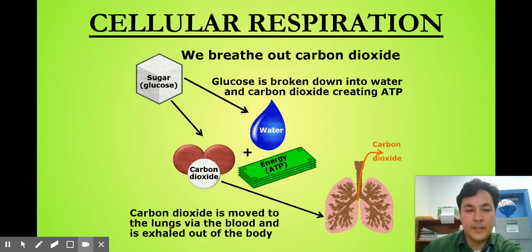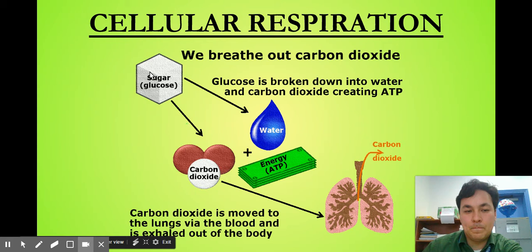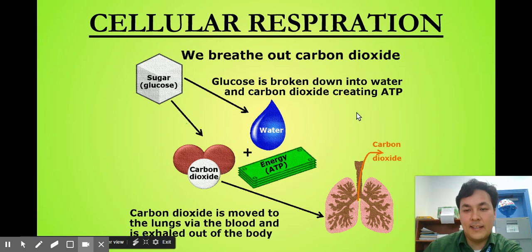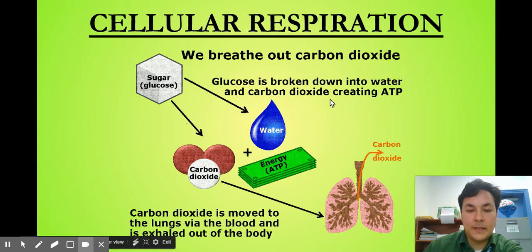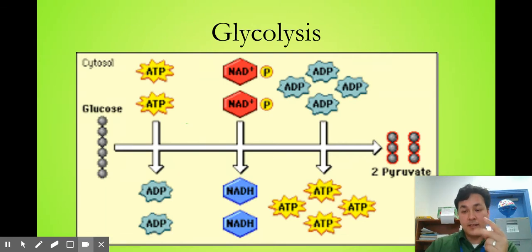Cellular respiration. Sugar that the plant made, we need to break it down into energy or ATP. If we just broke it down in one step, it would set our bodies on fire and kill us. We have to break it down in a series of steps so that we can get ATP out of it. The waste products are going to be carbon dioxide and water. There are three stages: glycolysis, the Krebs cycle, and the electron transport chain.